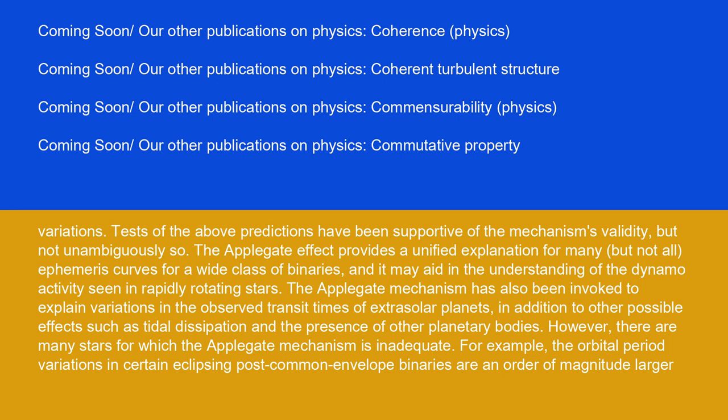The Applegate mechanism has also been invoked to explain variations in the observed transit times of extrasolar planets, in addition to other possible effects such as tidal dissipation and the presence of other planetary bodies.